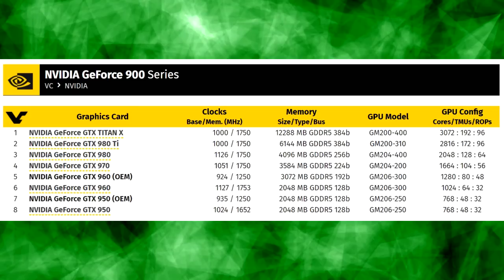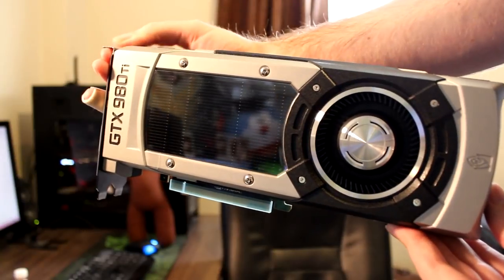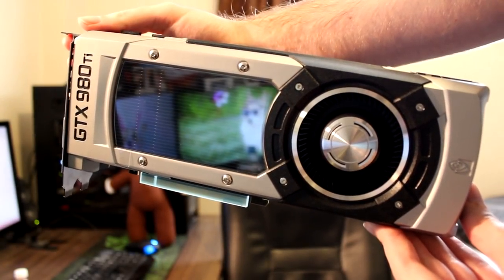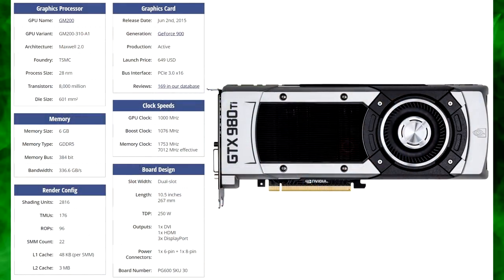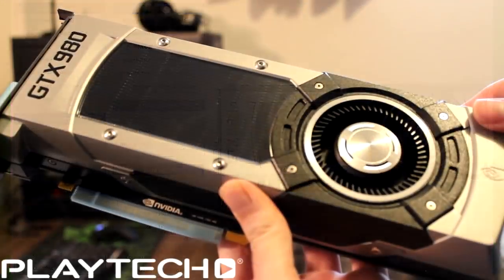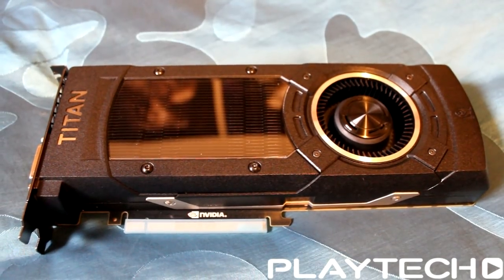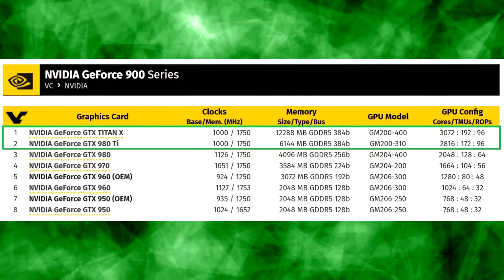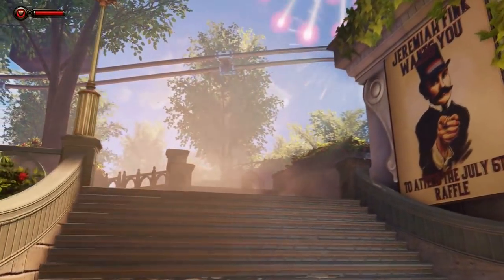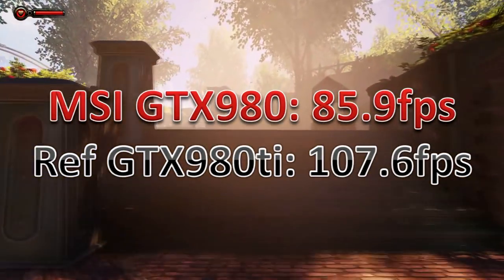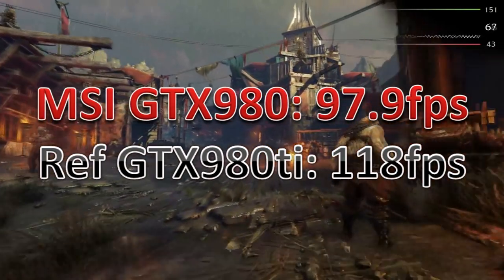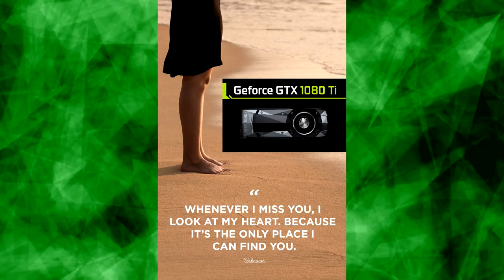The 900 series only saw a single TI card — the flagship GTX 980 TI — with its GM200 Maxwell GPU featuring 2,816 CUDA cores, 176 TMUs, 96 ROPs, alongside 6GB of GDDR5 memory at 7000 MHz on a 384-bit bus, arriving about 9 months after the GTX 980. The 980 TI shared almost nothing with the 980, being more or less a cut-down Titan X at $650 compared to the Titan X's $999, but with very similar performance. In my own testing the 980 TI beat the 980 by about 20 FPS on average, and I really enjoyed running the Asus Strix 980 TI in my personal rig.